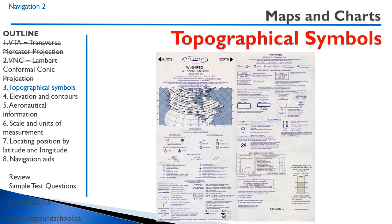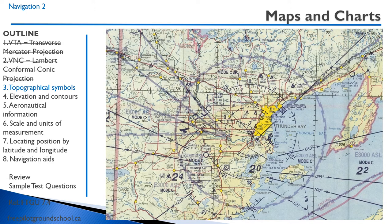There are a number of topographical symbols we're going to go through. You can reference the cover of your VNC — get it out and follow along. Starting with an easy one: an airport symbol shows the layout of runways on large airports. Then there's the aerodrome symbol — a circle. For example, Hain Field is an aerodrome shown as a circle, and you can see others nearby like Martin's Landing, Kakabeka Falls, and Eldorado Beach.